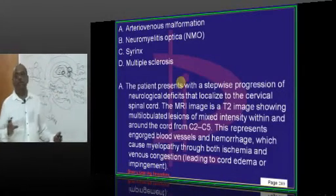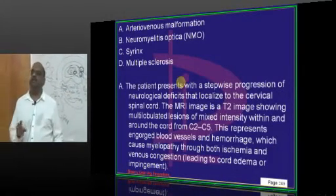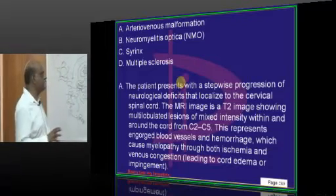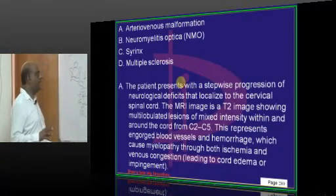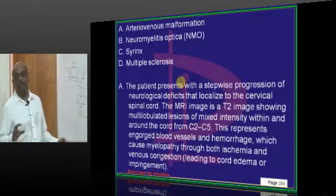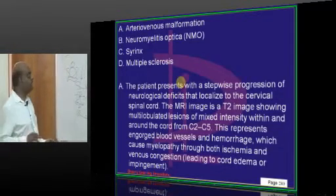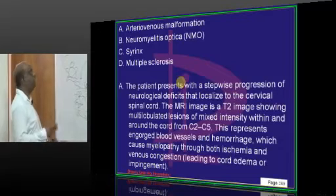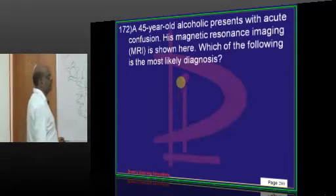A multi-lobulated lesion with mixed intensity in the cervical area with myelopathy is suggestive of an AV malformation.